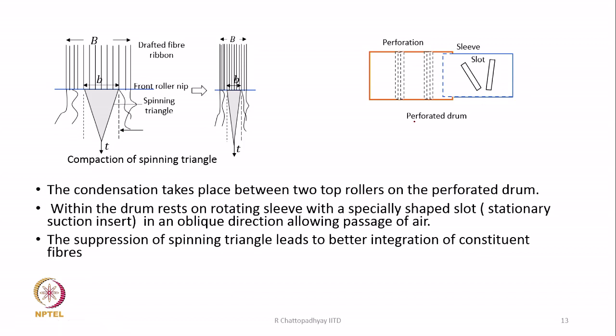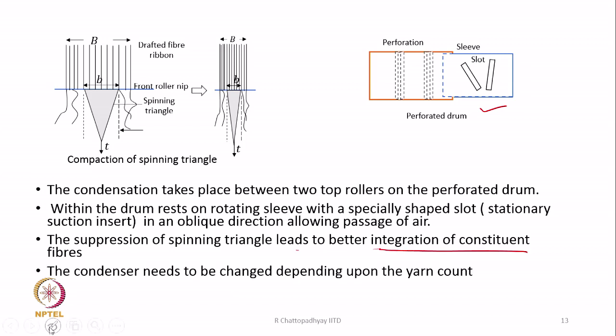After top roller 2, the narrow band of fibers is transformed into yarn by the ring and traveller — twisting remains unchanged. Twist reaches the nip of top roller 2, and at that point the fleece of fibers has already been compacted. The condenser needs to be changed depending on the yarn count, since counts can range from 20s to 60s. Accordingly, there are three different slot sizes — coarser, medium, and finer — and the appropriate one must be selected.